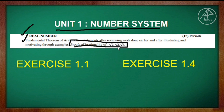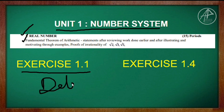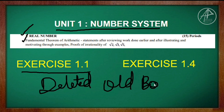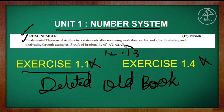The exercises related to this topic: Exercise 1.1 is deleted, and Exercise 1.4 is also deleted. So only Exercise 1.2 to 1.3 remain. Exercise 1.3 is related to proof of irrationality, and Exercise 1.2 is related to the Fundamental Theorem of Arithmetic. Topic 3 relates to real numbers in Chapter 1.